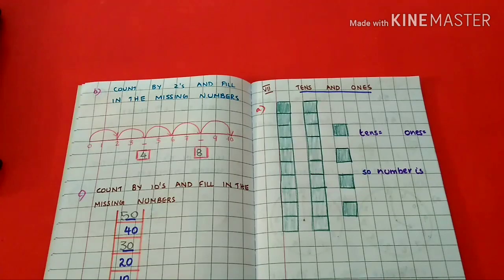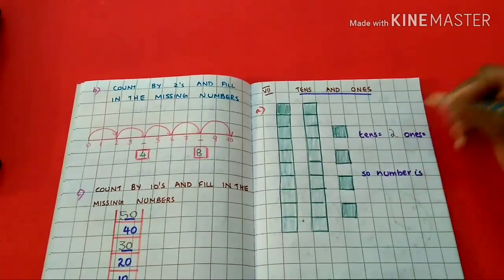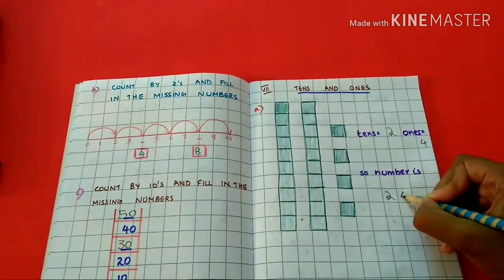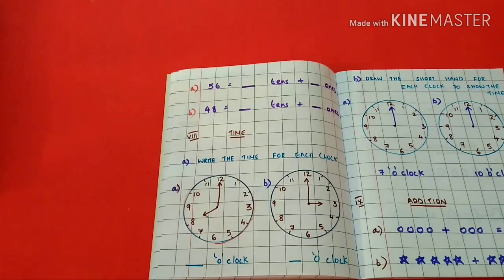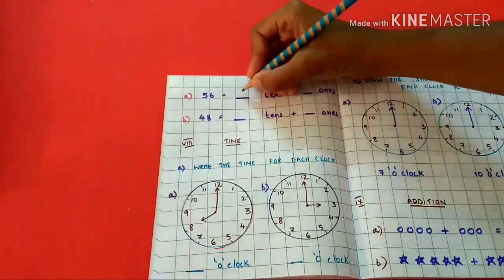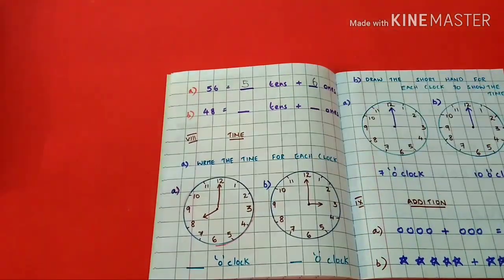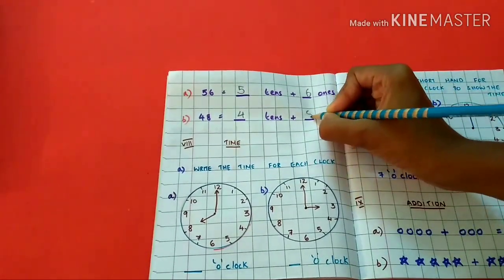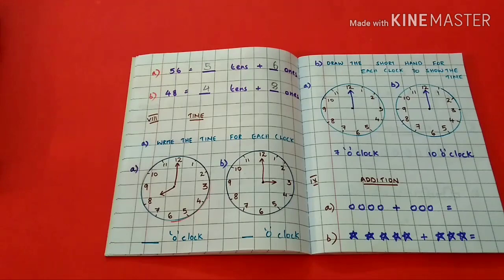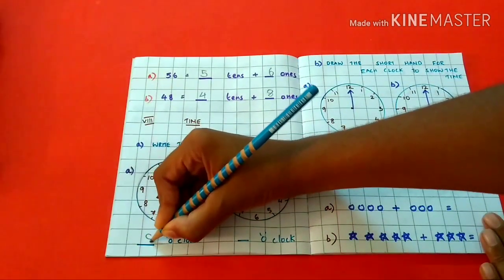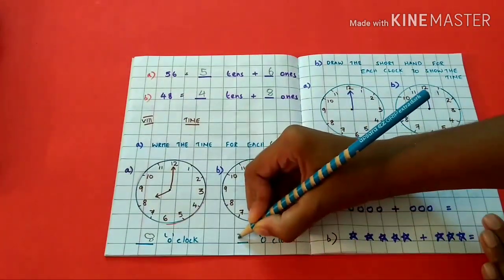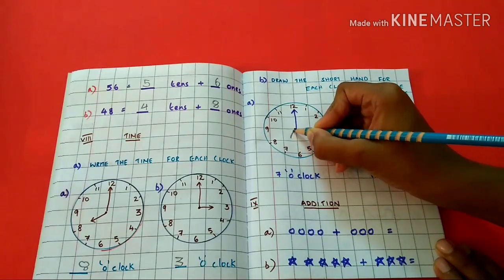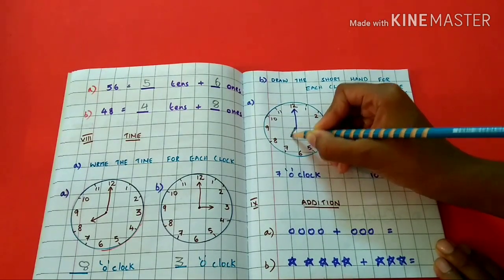10's and 1's: 2 tens, 4 ones — so the number is 24. 56 equals 5 tens plus 6 ones. 48 equals 4 tens plus 8 ones.